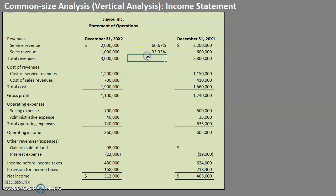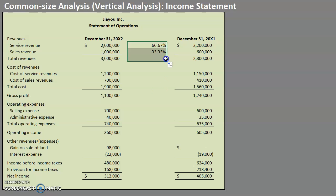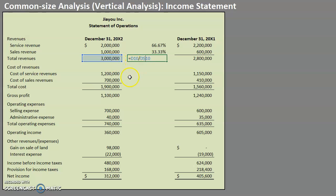Now this isn't an Excel video, but I'm going to use a formula to copy this down so I don't have to go one by one. Notice that for every single line item, I want my denominator to stay constant at three million, staying in row 10. So I'm going to use an absolute reference — hopefully you've seen these before — which will keep my formula anchored to D10 as I drag down. You'll see it stayed with D10 each time. Let's drag it all the way down using the fill handle.